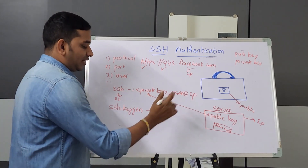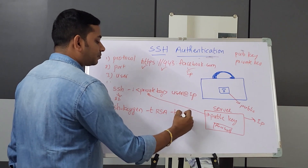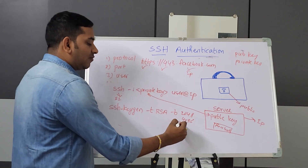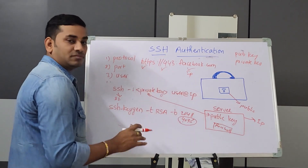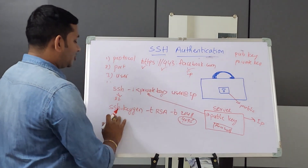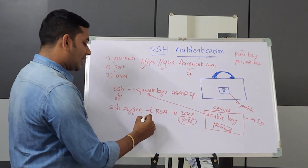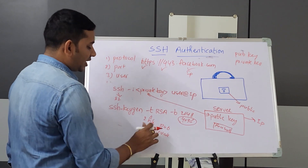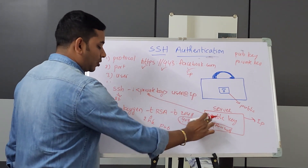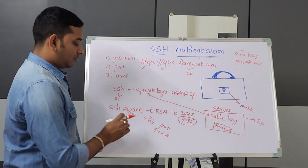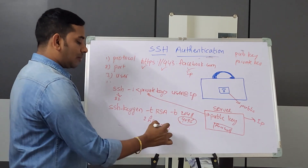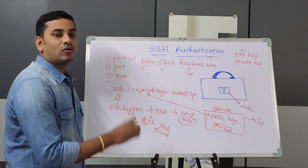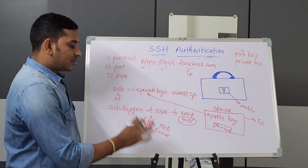The full command is: ssh-keygen -t rsa -b 2048 or 4096. The -b flag specifies the number of bits. 4096 bits is more secure. After running this command, you get two files: one is the public key and one is the private key. You upload the public key to the server and keep the private key on your local machine. You can generate multiple key pairs if needed.